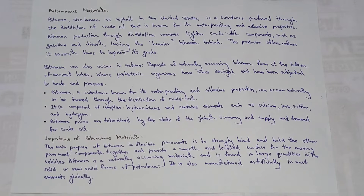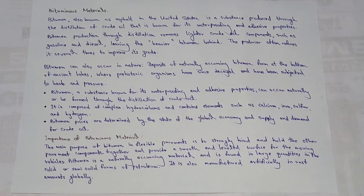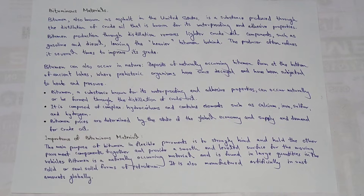Bituminous materials — bitumen, also known as asphalt in the United States — is a substance produced through the distillation of crude oil, known for its waterproofing and adhesive properties. Bitumen production through distillation removes lighter crude oil components such as gasoline and diesel.